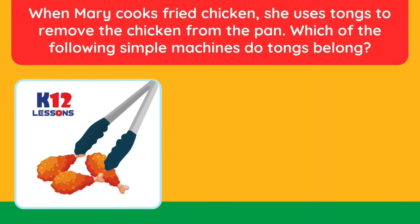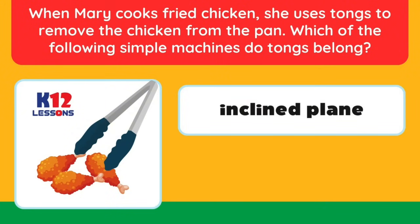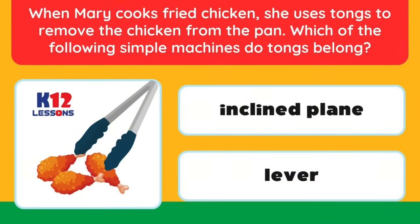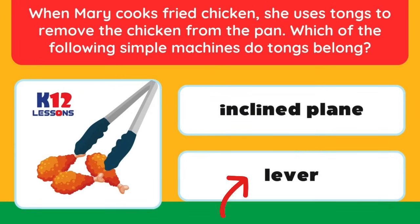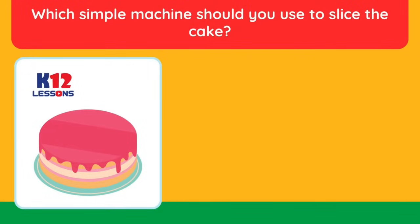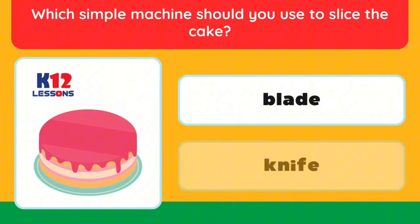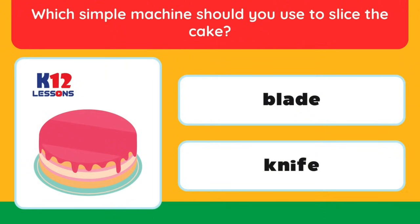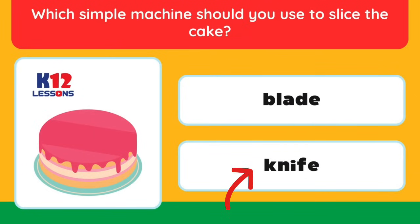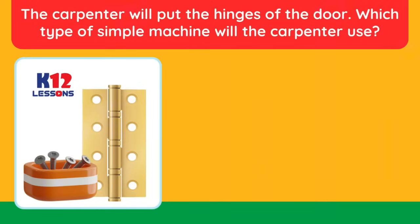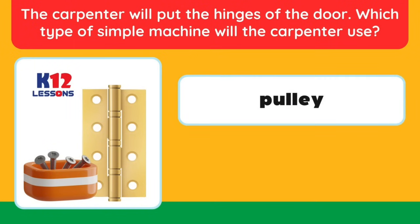Multiple choice questions: When Mary cooks fried chicken, she uses tongs to remove the chicken from the pan. Which simple machine do tongs belong to? Answer: lever. Which simple machine should you use to slice a cake? Answer: blade or knife. The carpenter will put hinges on the door — which type of simple machine will the carpenter use? Answer: screw.